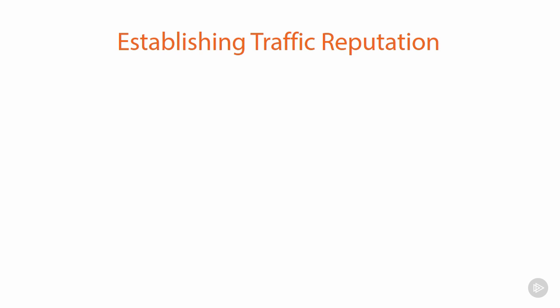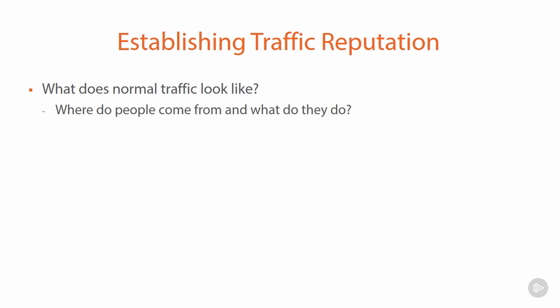Many denial-of-service defenses rely on reputation. For example, what does your normal traffic look like? Where does most of your audience come from, and what do they actually do when they're on your site? If your audience is typically very geographically constrained — perhaps from your local region — and they mostly perform the same set of common tasks on the website, then that is a pattern. When you see deviations from that pattern, that can be used to establish the reputation of that traffic.